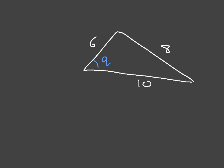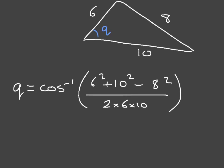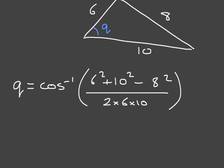This fits the cosine rule criteria perfectly. We can see that we don't have any of the interior angles, but we do have all three side lengths. So to find Q, we use the cosine rule: Q equals the inverse cosine of the sum of the squares of the two adjacent sides — 6 and 10 — so that's 6 squared plus 10 squared, minus the square of the opposite side, which is 8 squared, divided by 2 times the product of the adjacent sides, 2 times 6 times 10. Using a calculator and rounding to one decimal place, Q is equal to 53.1 degrees.